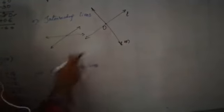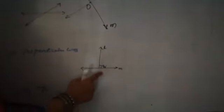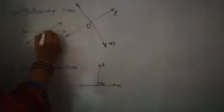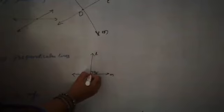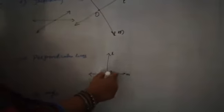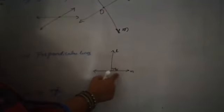Imagine what are intersecting lines. Perpendicular lines — the lines which intersect at 90 degrees are called perpendicular lines. Two lines which intersect at 90 degrees are called perpendicular lines. Here also intersecting, but here intersecting at 90 degrees, a right angle — these are called perpendicular lines.